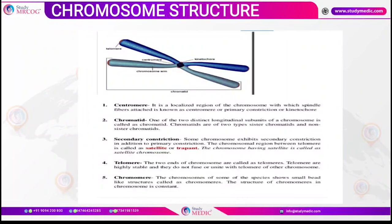A basic chromosome consists of two arms: a short arm called the P arm and the long arm called the Q arm. These two arms are connected at the middle, known as a centromere. The centromere is also called the primary constriction or kinetochore. During cell division, each chromosome splits into two distinct longitudinal subunits called chromatids. Apart from the primary constriction, a chromosome can have a secondary constriction nearer to the telomeric end.